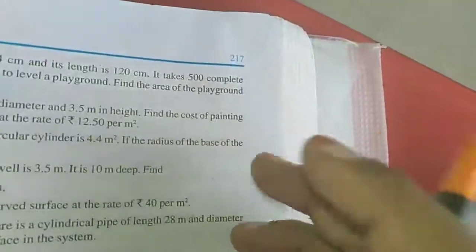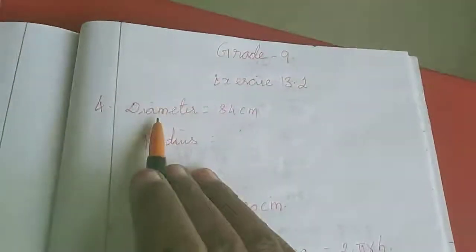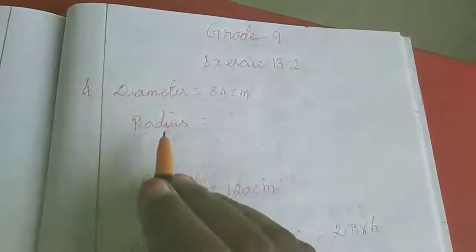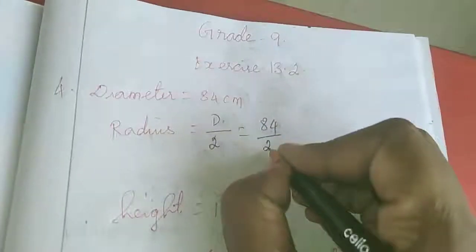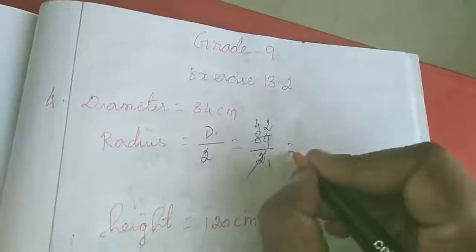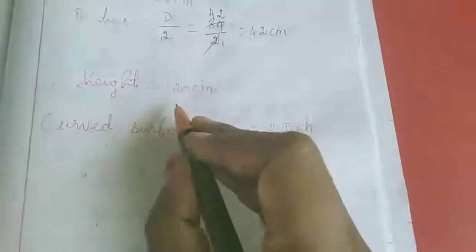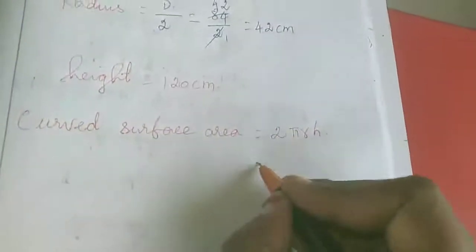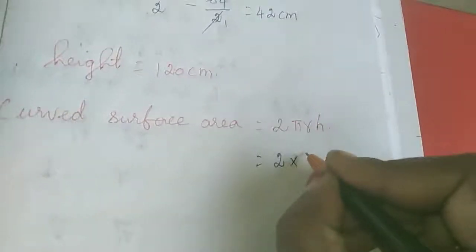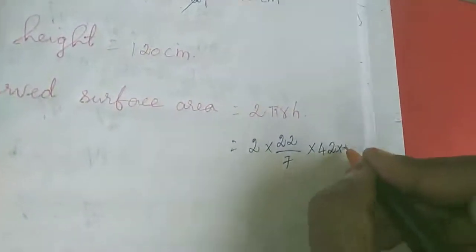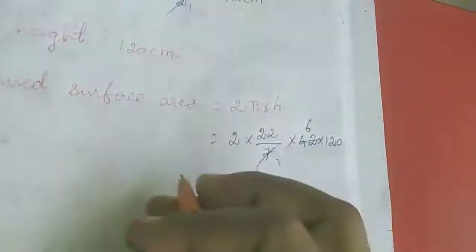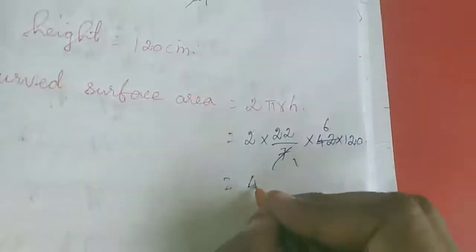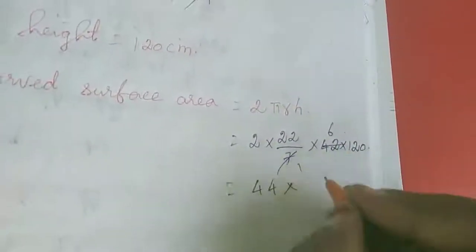Now I am going to work out in notes. This is the measurement they gave. Diameter is 84 cm but we need radius. So diameter by 2, that is 84 by 2, equals 42 cm. Height is 120 cm. Curved surface area formula is 2πrh. So 2 into π, 22 by 7, r is 42, into 120.